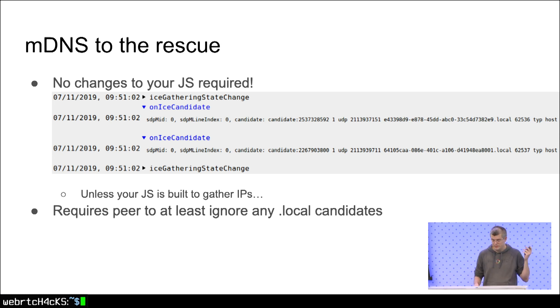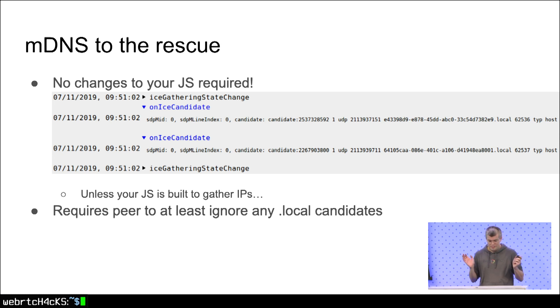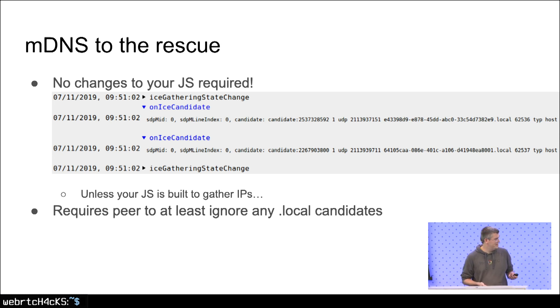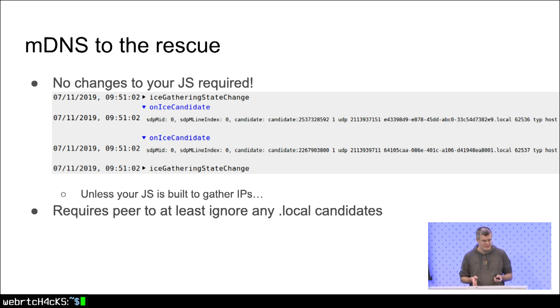Unless your JavaScript is parsing out IPs from candidate strings, in which case you have a problem — but that's not our problem. There are some interoperability issues: your peer needs to at least ignore any .local candidates it doesn't understand.